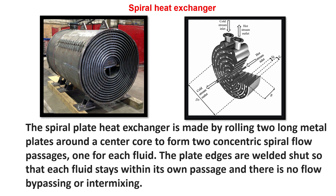The spiral plate heat exchanger is made by rolling two long metal plates around a central core tube to form two concentric spiral flow passages, one for each fluid. The plate edges are welded shut so that each fluid stays within its own passage and there is no flow bypassing or intermixing.